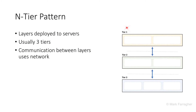Finally, the n-tier pattern. The n-tier pattern is actually the same as the layered pattern, but now all the layers are on separate servers. Tier 1 is on one server, tier 2 is on another server, and tier 3 is on another server. This is basically the same diagram as the layered architecture, but now I've drawn network boundaries between the layers. That means the communication between the layers uses a network — very important.